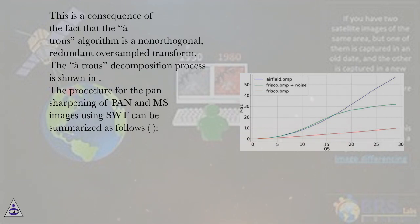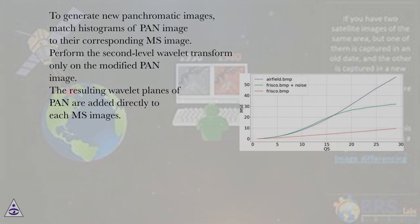To generate new panchromatic images, match histograms of PAN image to their corresponding MS image. Perform the second level wavelet transform only on the modified PAN image.